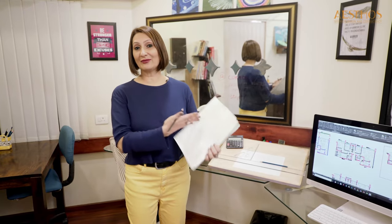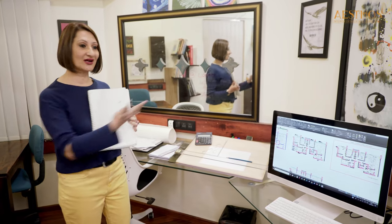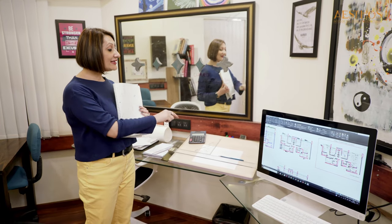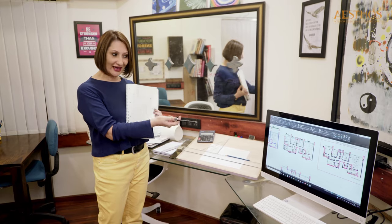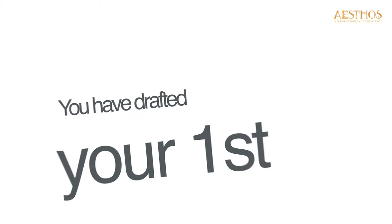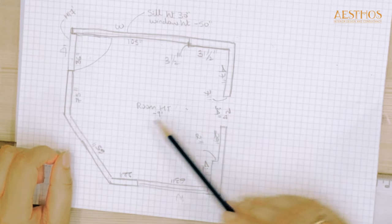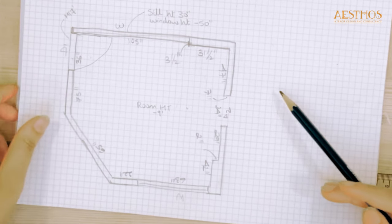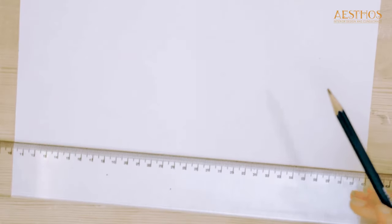Now that we have all the measurements on our grid book, it's time to transfer them to the drafting board on a neat piece of paper to scale. Or if you use CAD, you can transfer it to CAD. So these are the measurements we have taken at site — it's time now to transfer them to a neat sheet of paper.